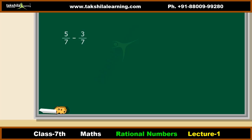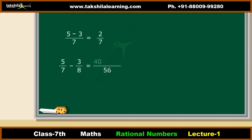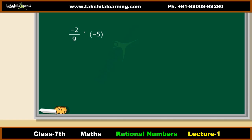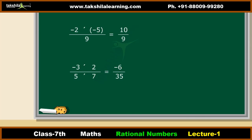For subtraction: when denominators are the same, we subtract the numerators keeping the denominator the same. If denominators differ, we find the LCM, convert both rational numbers to equivalent forms with the LCM as the denominator, then subtract. For multiplication: when multiplying a rational number by a positive integer, we multiply the numerator by that integer, keeping the denominator unchanged. When multiplying two rational numbers, we multiply the numerators and then multiply the denominators.